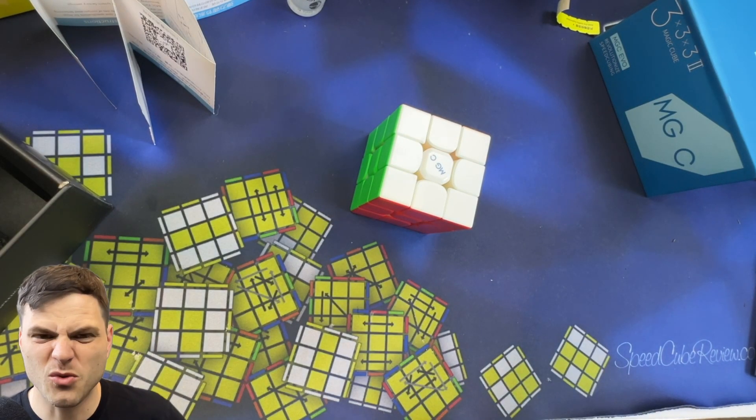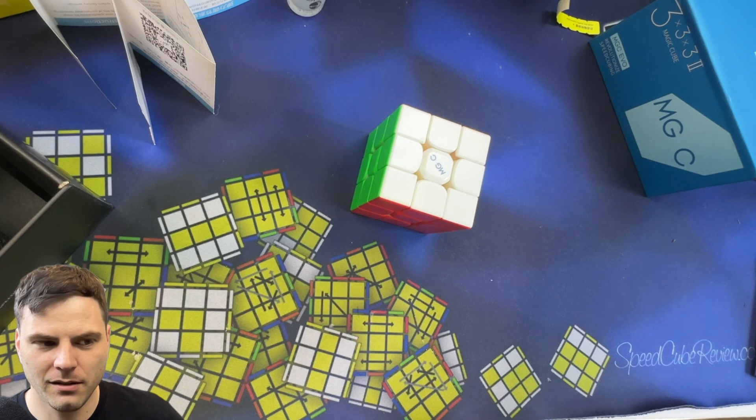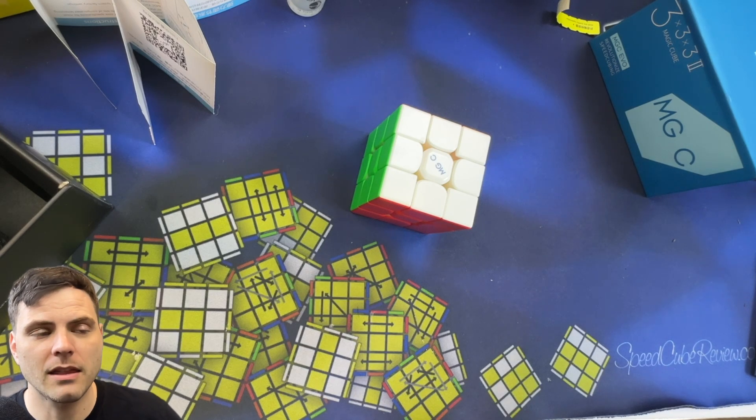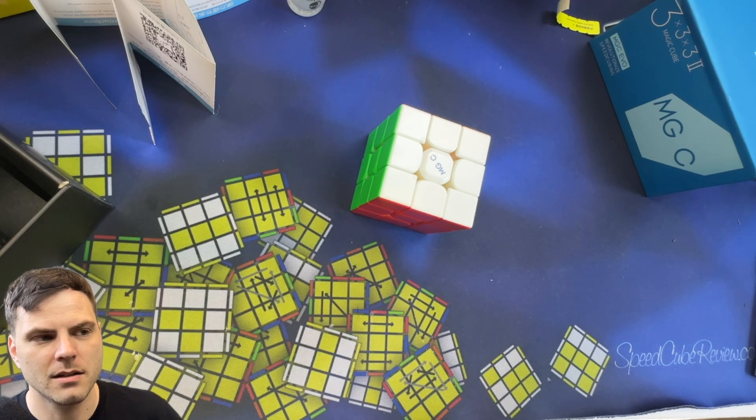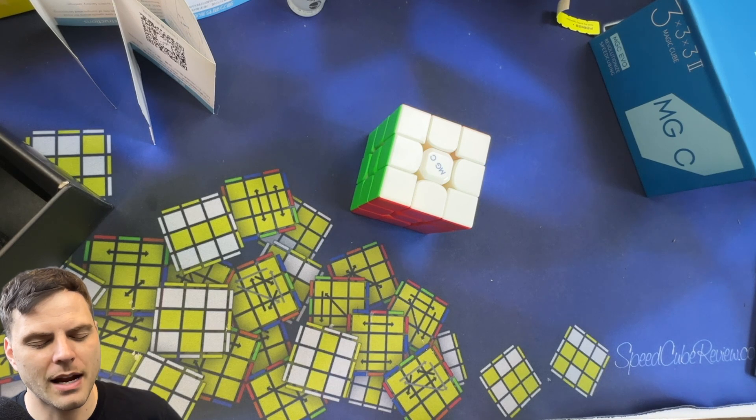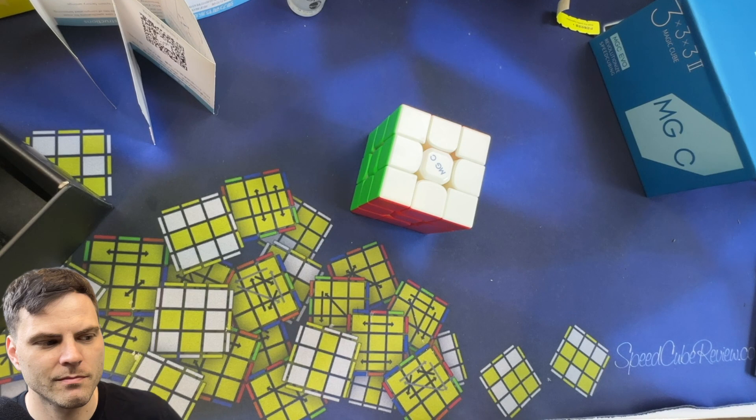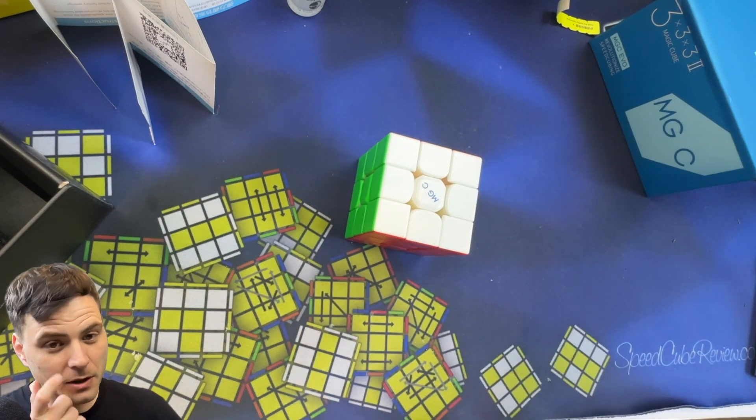And we went to really solid puzzles, ones like the Dayan Tengyun and the Gan X. And then we went to very light puzzles, like the Gan, and papery thin puzzles like the Gan 11. And what else was around that era that had a similar feeling? I don't know. And then we've kind of shifted. We're starting to shift back in different directions, but I don't know if this is really what the community is going for right now.